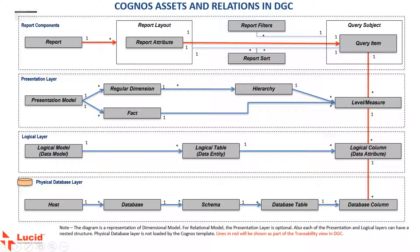The following are the assets and relations that get loaded from Cognos into Collibra. Reports contain report layouts, which in turn hold report attributes. These are then linked to query subjects, which contain query items, dimension hierarchy, and measures. The logical layer holds the assets of the framework model layers or the cube models, and there could be multiple layers nested here.